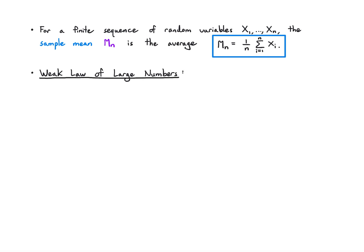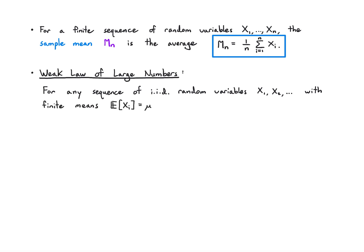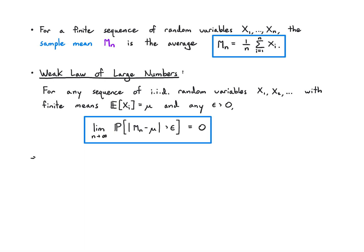The weak law of large numbers tells us that if I have an IID sequence of random variables x1, x2, and so on, with finite means — they all have the same mean because they're IID, the mean is mu — then for any epsilon greater than zero, the limit as n goes to infinity of the probability that the sample mean deviates from its true mean by more than epsilon is zero. So as you increase n, the chance that you lie more than epsilon away from the true mean goes to zero, and you're allowed to pick any epsilon greater than zero.